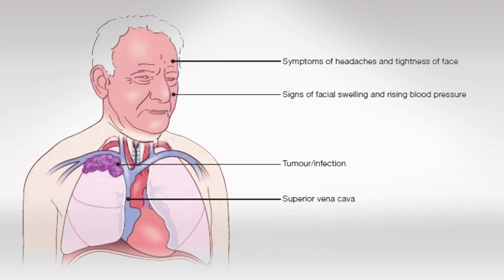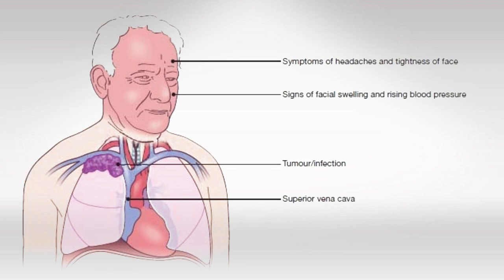In the areas where the vein normally drains there's going to be severe edema and redness. We expect to see edema in the arms, in the neck, and in the head. Edema in the arms can be tolerated, but in the neck and head it can be very fatal, especially if severe, and it can cause aneurysms and aneurysm rupture.